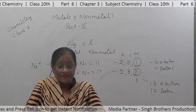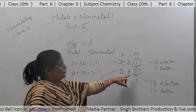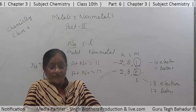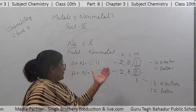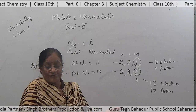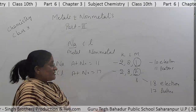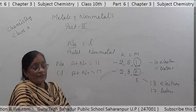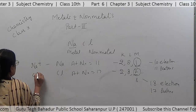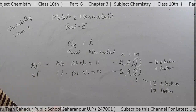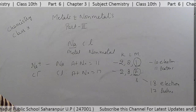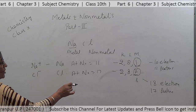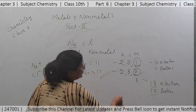Chlorine has 7 electrons in its outermost orbit and requires 1 more electron to complete its octet. If sodium and chlorine react, the electron lost by sodium can be taken up by chlorine. After gaining 1 electron, the chlorine atom gets a unit negative charge because its nucleus now has 18 electrons and 17 protons.